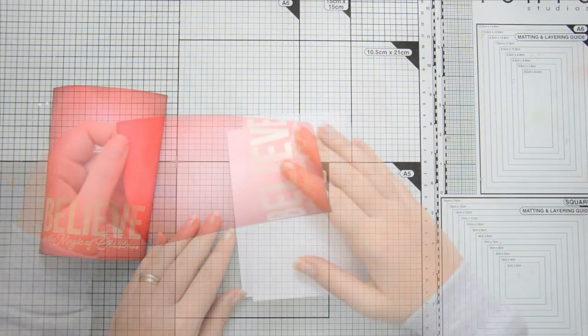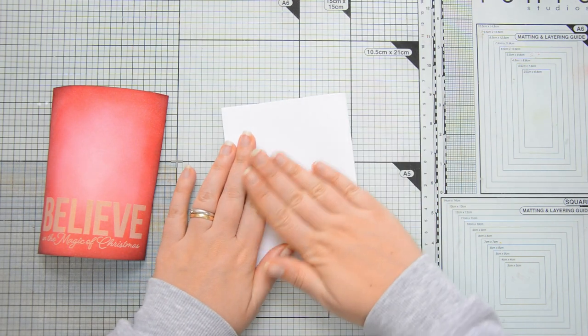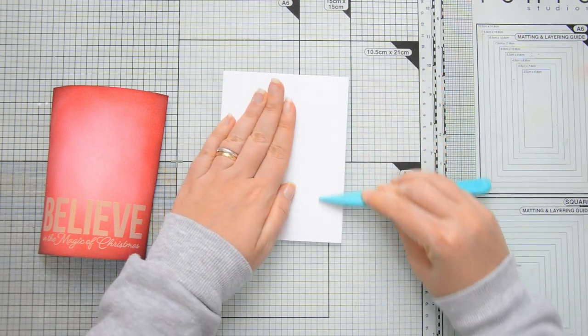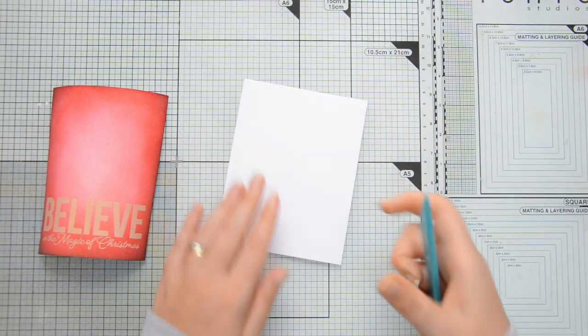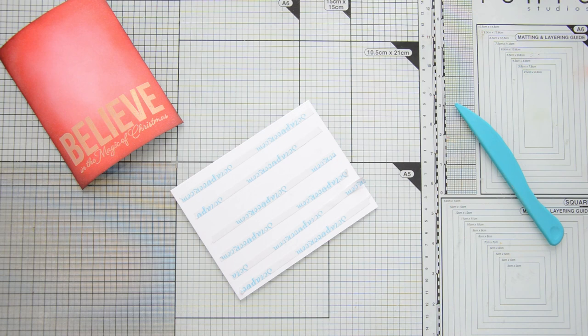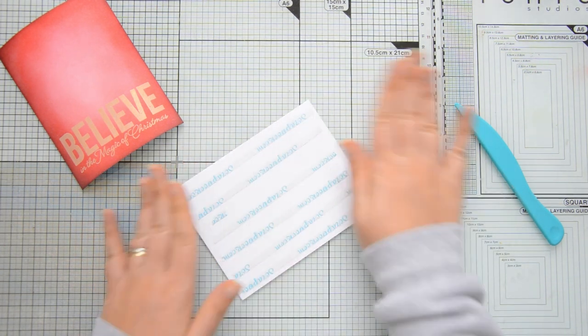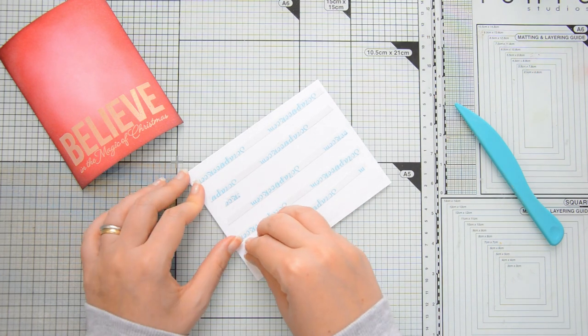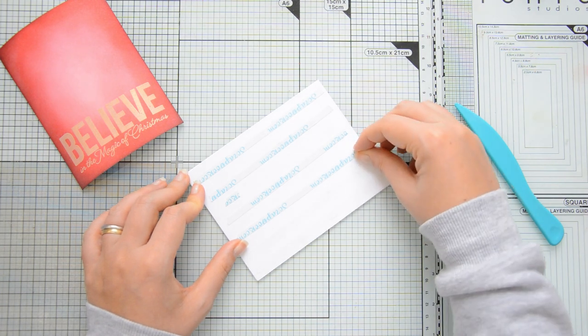I then used one of these pre-cut and pre-scored card bases by scrapbook.com for the base of my card. These are cut to five and a half by eight and a half inches and scored at four and a quarter inches so they make A2 size cards. I used a very generous amount of double-sided adhesive to adhere the card front to my card base because it had warped a little bit from the heat from the heat gun during the heat embossing.